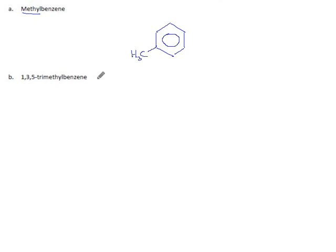1,3,5-trimethylbenzene. Well, benzene means start with this. Now, three methyl groups and they go on carbon number one, not on two, yes on three, not on four, and yes on five. So there's a methyl group. And there's a methyl group. And here's another methyl group.